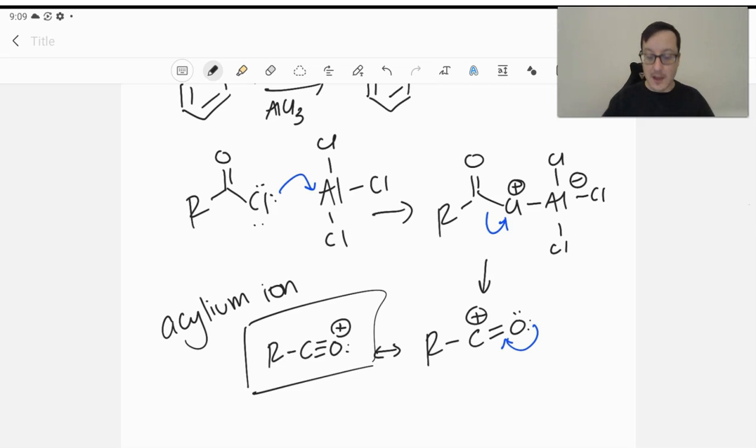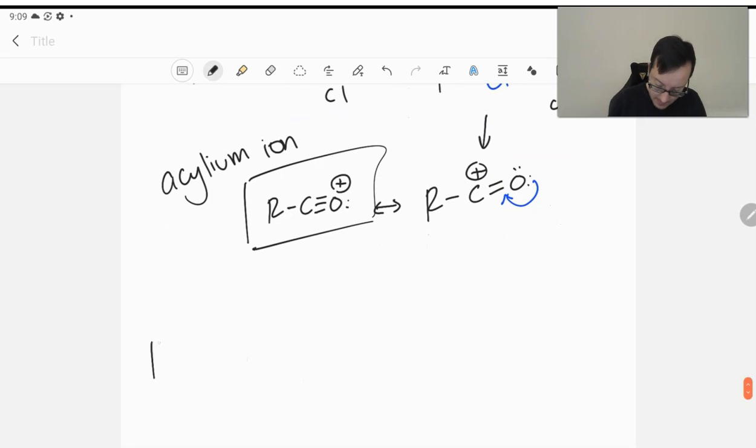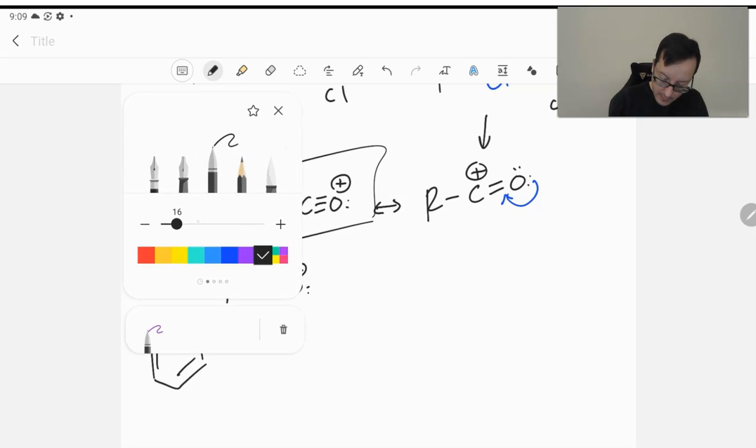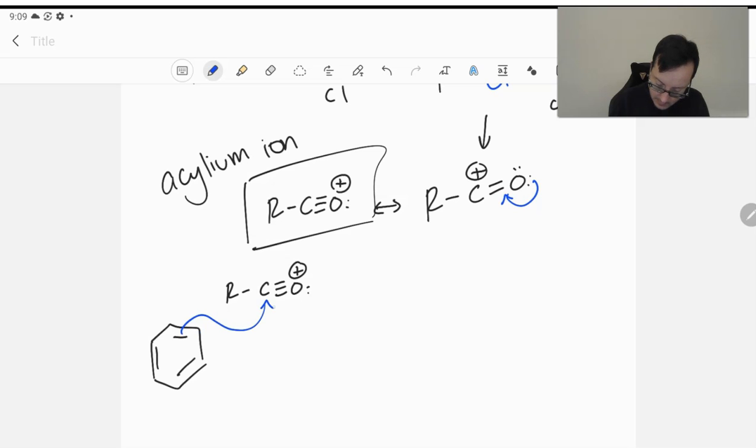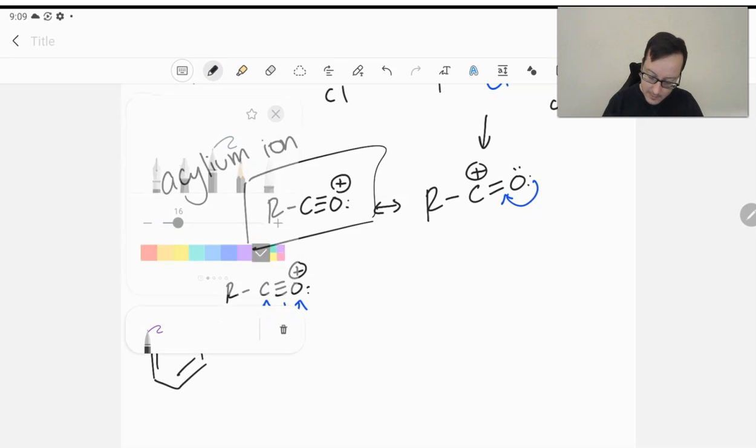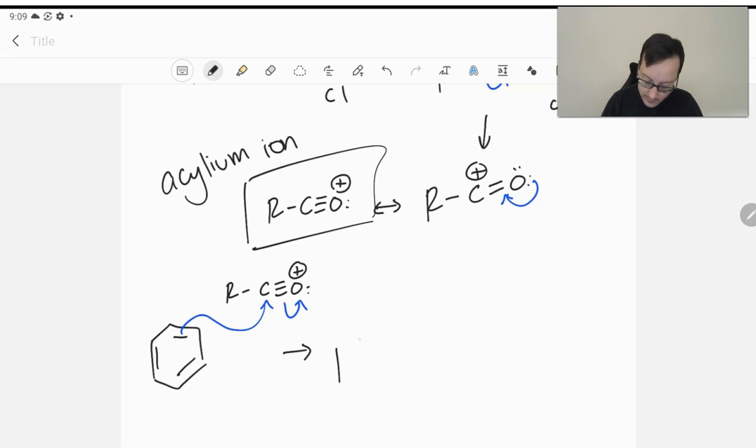And so if we go ahead and take a look at what that looks like with benzene. I bet you all are sick of this by now, but don't worry, it's our last one. We've got our positive oxygen there. We're going to go ahead and attack the carbon, because the carbon is the electrophilic site. We're going to end up popping open that oxygen-carbon bond. And lo and behold, we will now have a ketone along with our carbocation on the benzene.